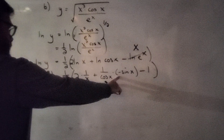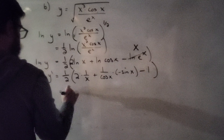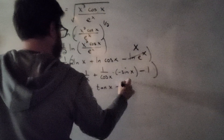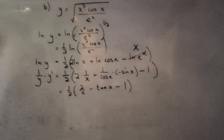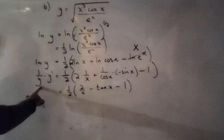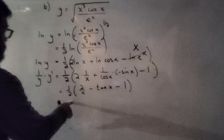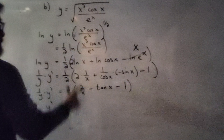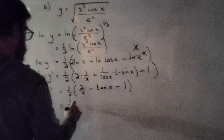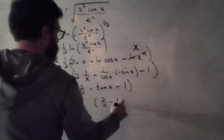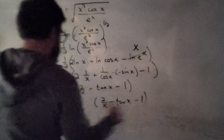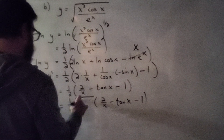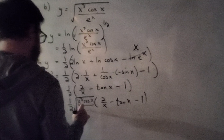Cleaning up: sine over cosine is tangent, so this becomes one-half times 2 over x minus tangent of x minus 1. Multiplying both sides by y to isolate y prime: y prime equals y times one-half times the quantity 2 over x minus tangent of x minus 1. Substituting back the original expression, y is the square root of x squared cosine of x all over e to the x.